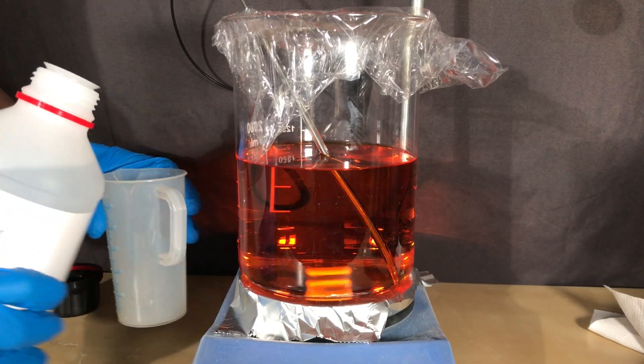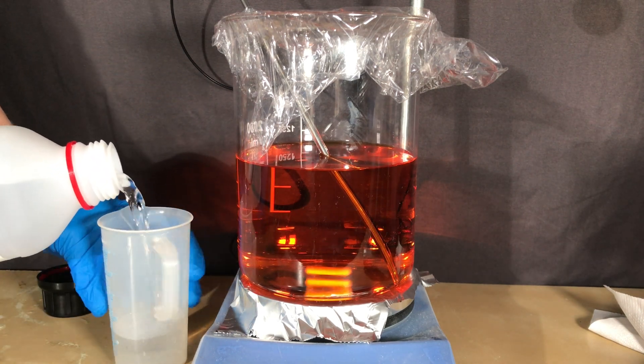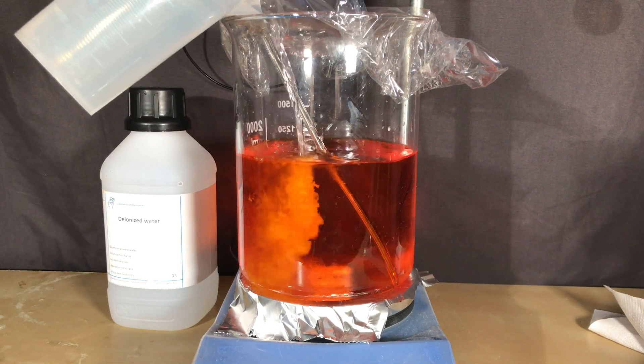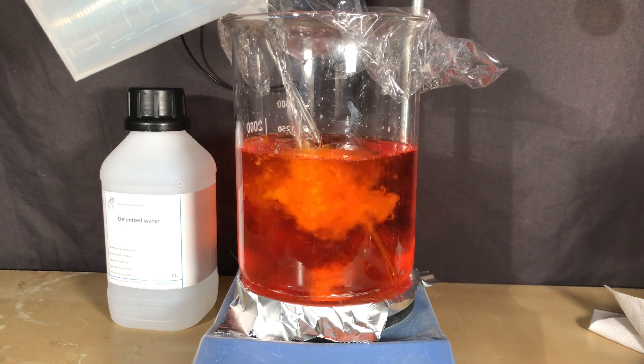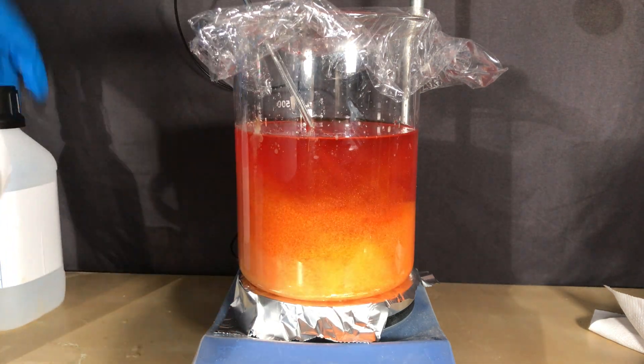Even if we cooled the solution down in the fridge we wouldn't get any crystals. Therefore we are going to add 500 milliliters of ice cold distilled water. Upon the first addition we already got a lot of precipitates.